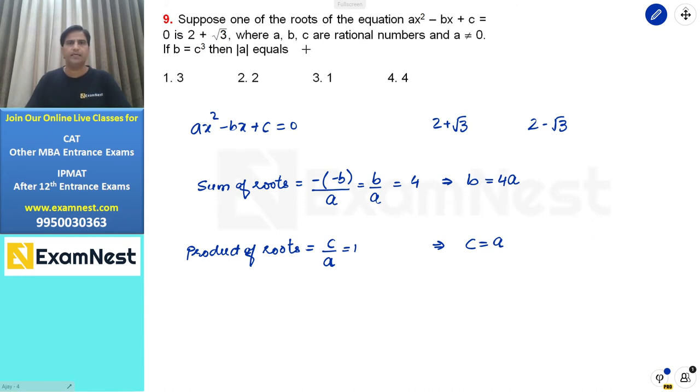The question gives additional information: a, b, c are rational numbers, a is not equal to 0, and b equals c³. Since b equals 4a and this equals c³, we get 4a = a³.